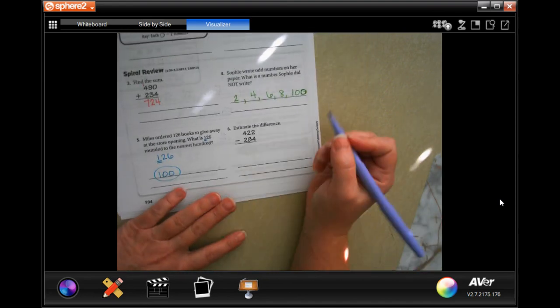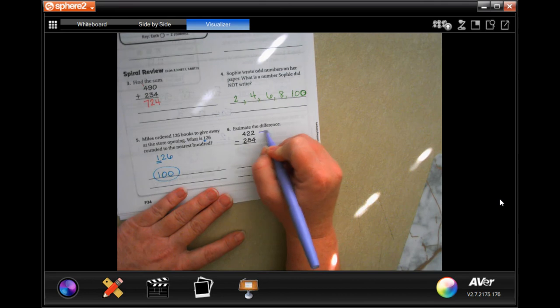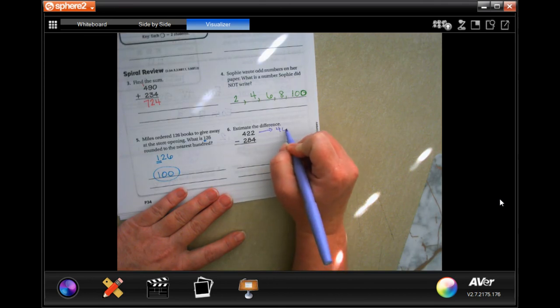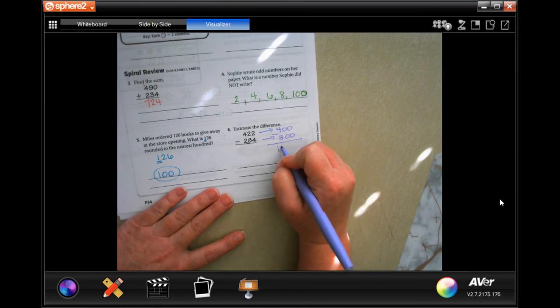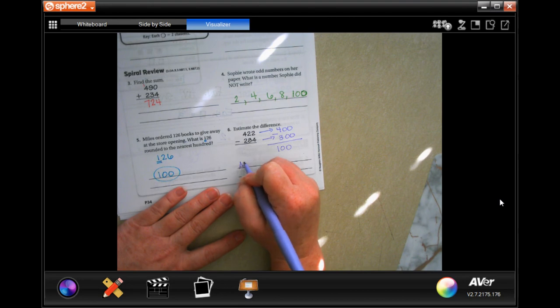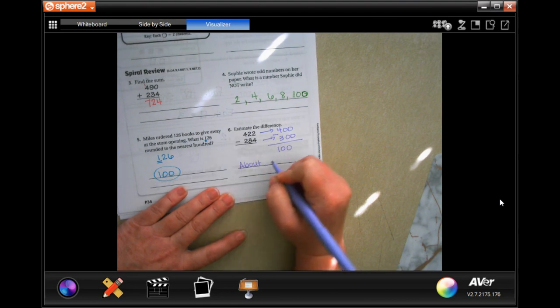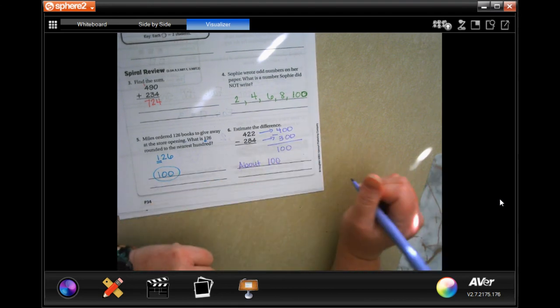We're going to estimate the difference. 422, I would round that to 400. 284, I would round that to about 300. When we subtract, we would get 100. So about 100.